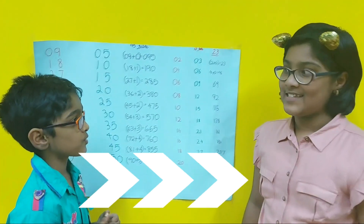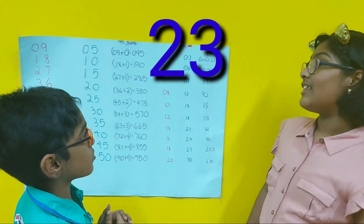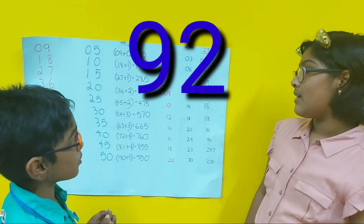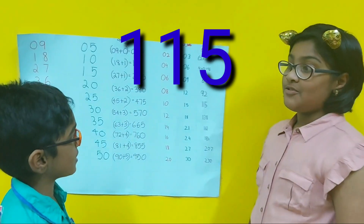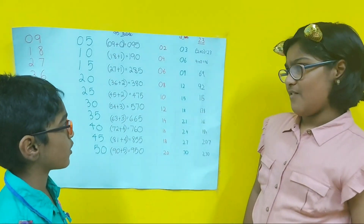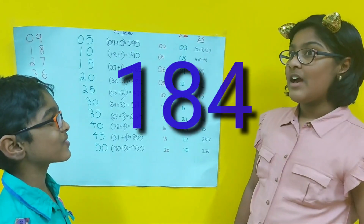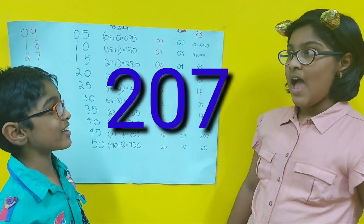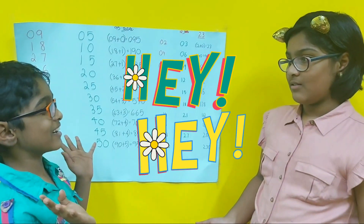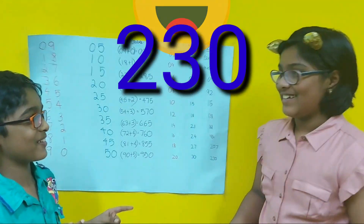Let's do it faster. 23 ones are 23. 23 twos are 46. 23 threes are 69. 23 fours are 92. 23 fives are 115. 23 sixes are 138. 23 sevens are 161. 23 eights are 184. 23 nines are 207. And finally 23 into 10 is 230.